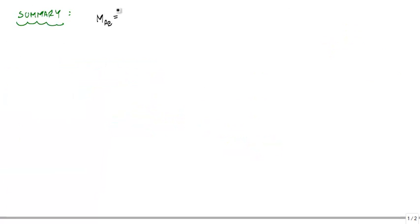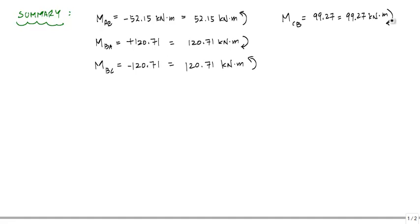So in summary, we had MAB was equal to negative 52.15 kilonewton meters, which means that we have 52.15 kilonewton meters going counterclockwise. Same with member MBA, we got positive 120.71, which is 120.71 kilonewton meters going clockwise. And so with the rest here, this would be MBC is 120.71. This is negative 120.71, MCB is 99.27 kilonewton meters clockwise, MBC is 99.27 kilonewton meters counterclockwise, and MDC is equal to 12.12 kilonewton meters counterclockwise.